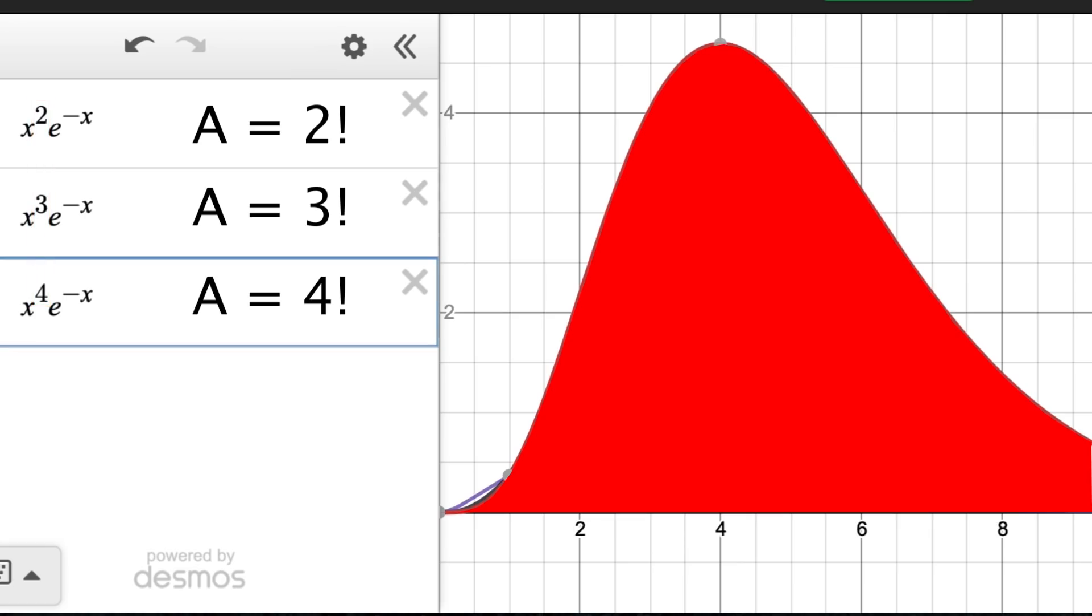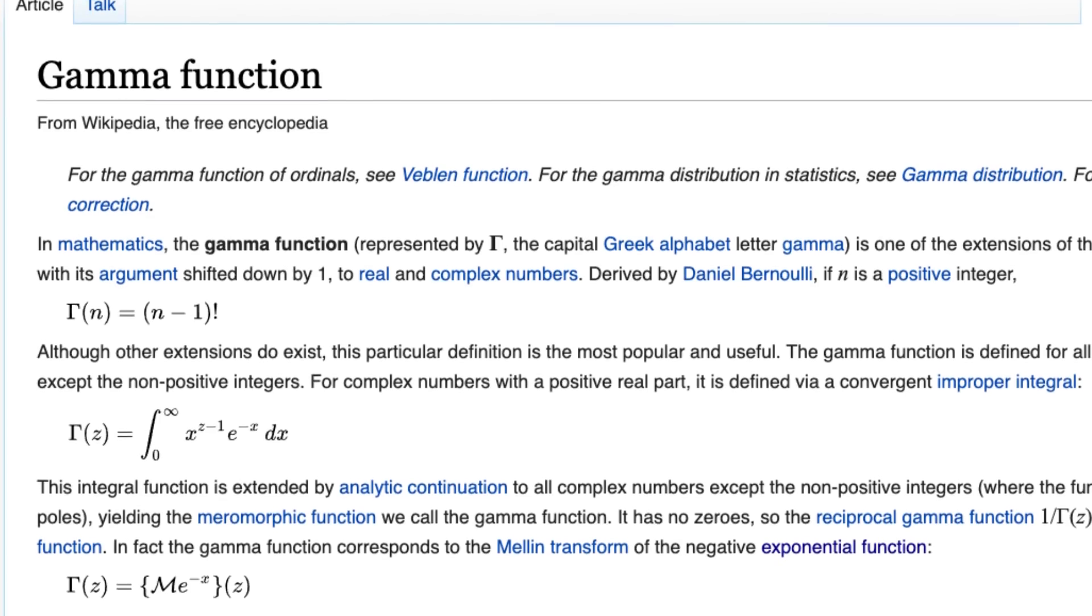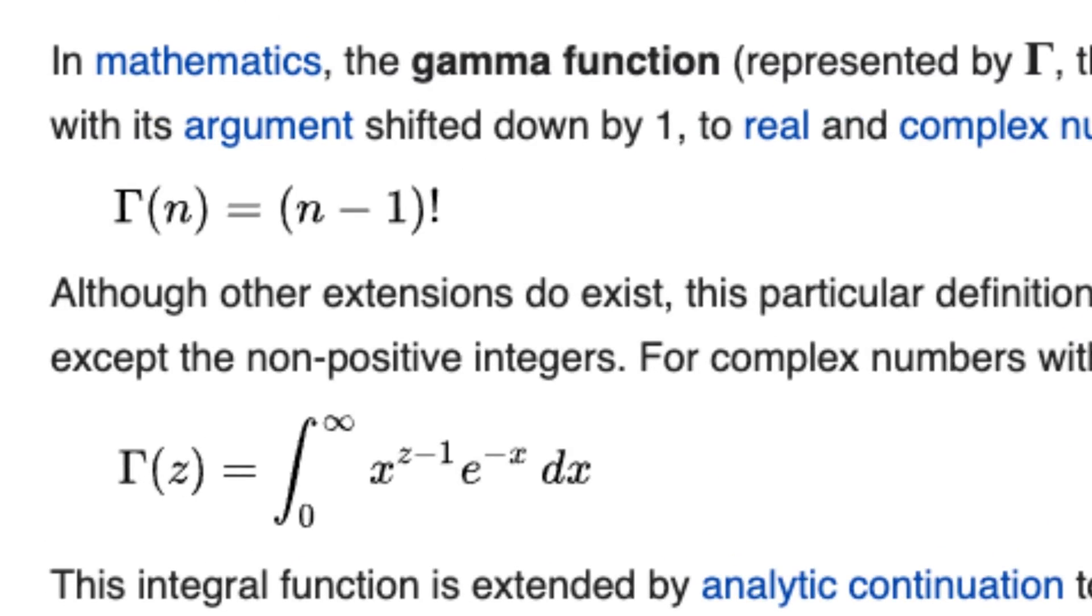Another way to write this is the integral of this curve from 0 to infinity equals that exponent we see here, factorial. And this takes us to the gamma function, which is written a little differently, but says the same thing.